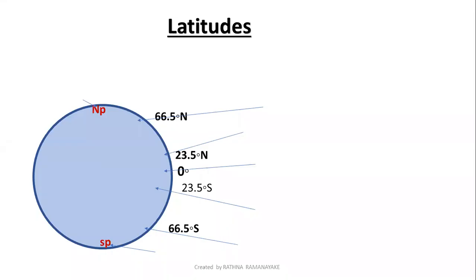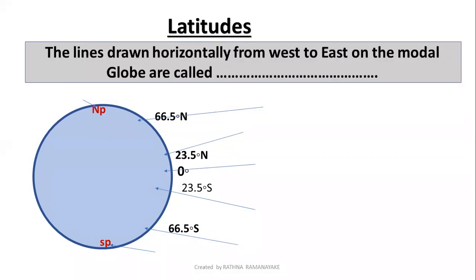Today I am going to explain latitudes. What are latitudes? The lines drawn horizontally from west to east on the model globe are called latitudes. Horizontally means from west to east.